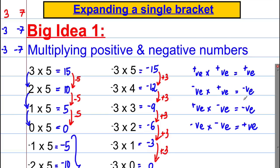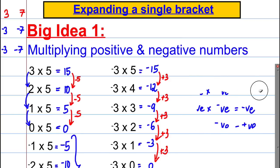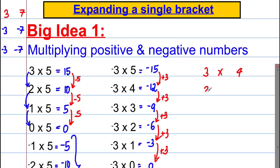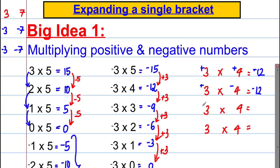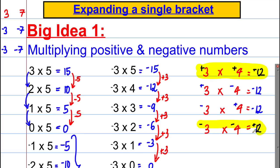To summarize with a clear example: positive 3 × positive 4 = positive 12; positive 3 × negative 4 = negative 12; negative 3 × positive 4 = negative 12; negative 3 × negative 4 = positive 12. The easy way to remember it: when the signs are the same you get a positive answer, and when the signs are different you get a negative answer.